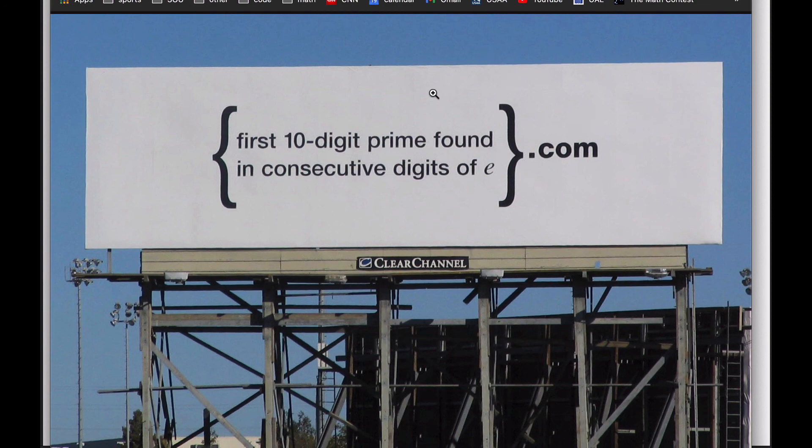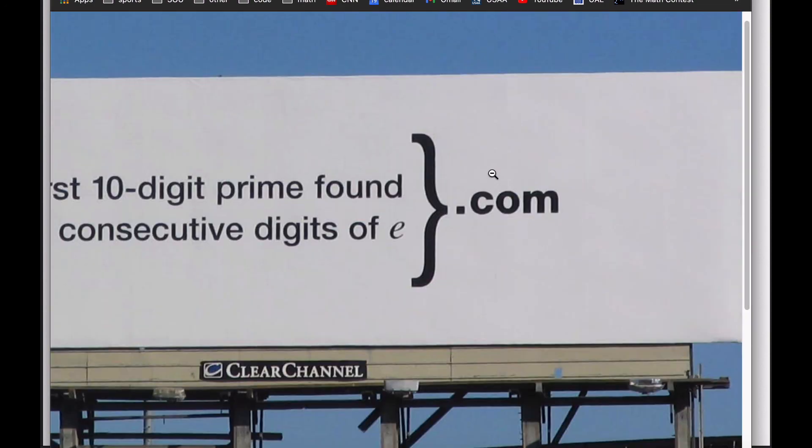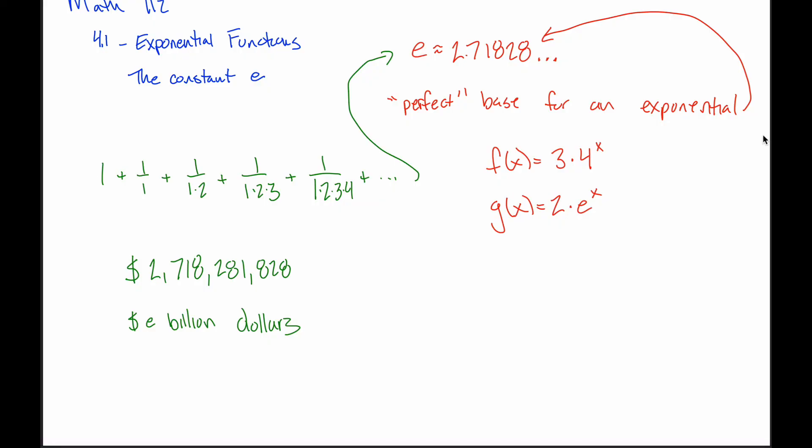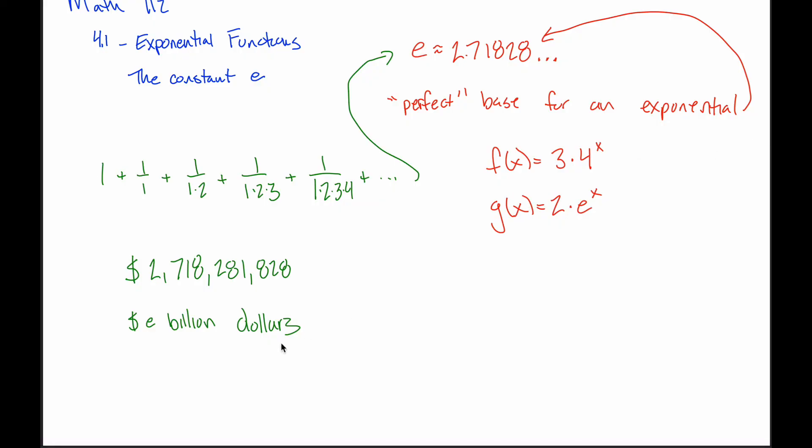At any rate, this was another way that Google gave a shout out to this mathematical constant E, which I think is kind of interesting for our class. You don't have to find any of that interesting. You don't need to know anything in here in green. All you need to know is that E is a base that we'll see a lot in this class because in some sense, that sense won't be made clear until calculus, E is a perfect base for an exponential. For our purposes, it's a number that's about 2.7. That's all.